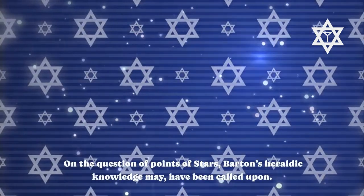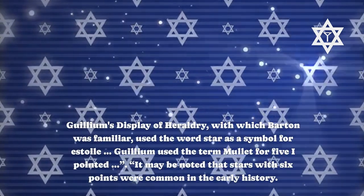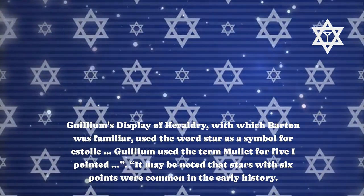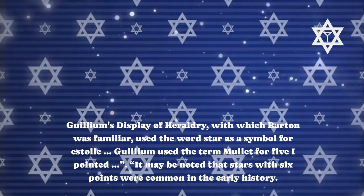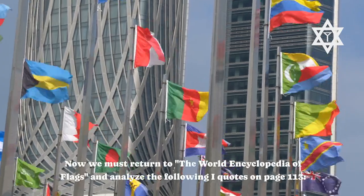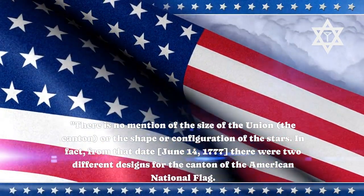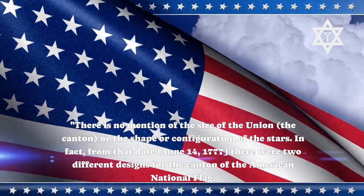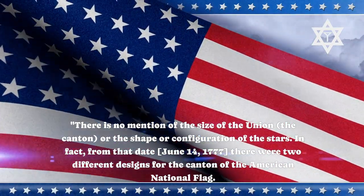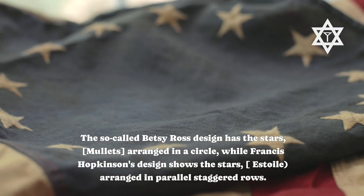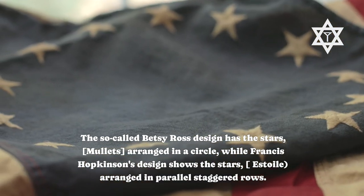On the question of star points, Barton's heraldic knowledge was called upon. Gilliam's 'Display of Heraldry,' with which Barton was familiar, used the word 'star' as a symbol for an estoile; Gilliam used the term 'mullet' for five-pointed. Stars with six points were common in early history. Returning to 'The World Encyclopedia of Flags,' page 113: there is no mention of the size of the union canton or the shape of the stars. From June 14, 1777, there were two different designs for the canton: the so-called Betsy Ross design with stars in a circle, and Francis Hopkinson's design with estoiles arranged in parallel staggered rows.